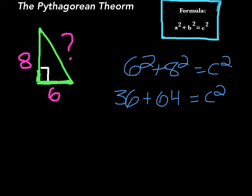36 plus 64 equals 100, equals c squared, but you don't want to find c squared, you just want to find c.